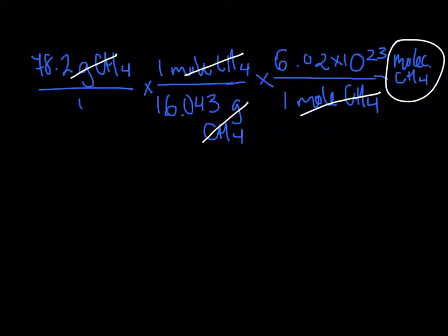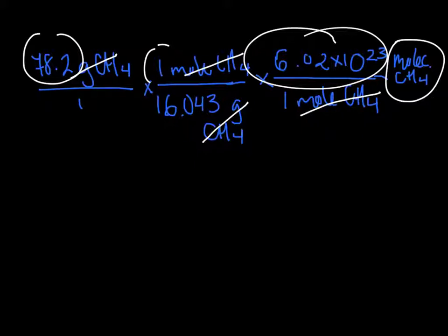And then you're going to multiply all the tops together, so multiply 78.2 times 1 times 6.02 times 10 to the 23rd, and that number divide by the bottoms. It is 16.043 and 1.